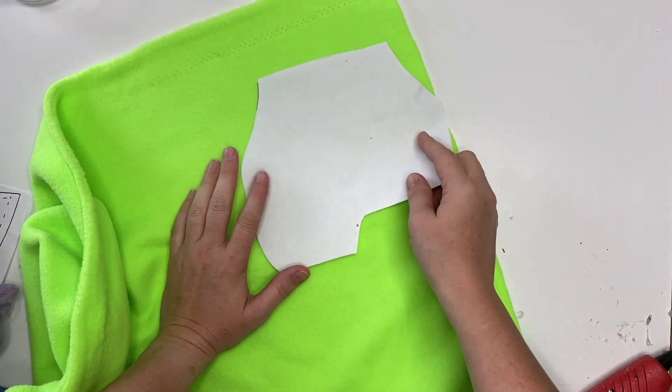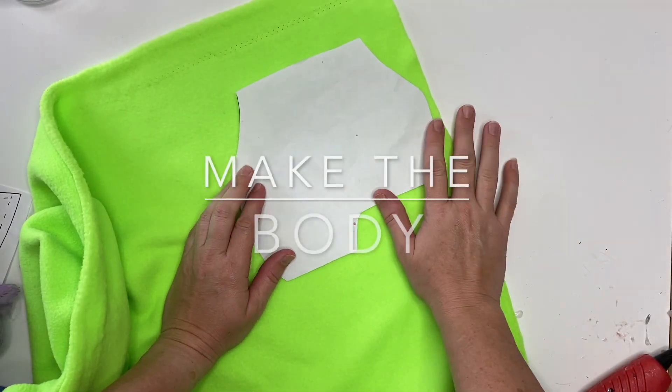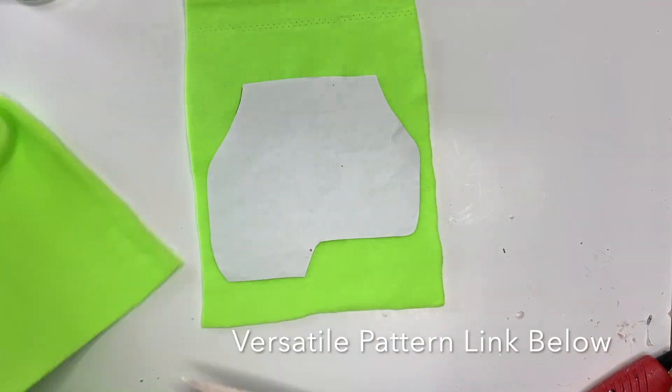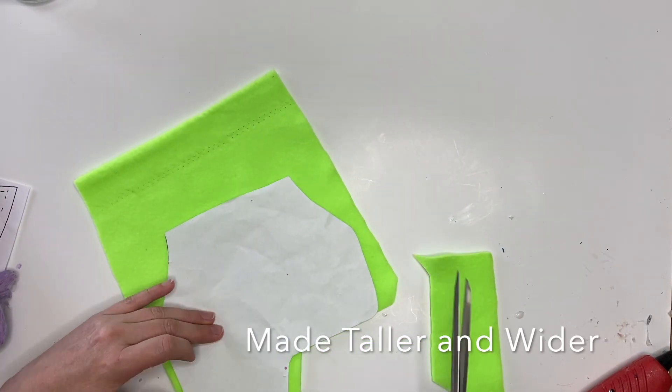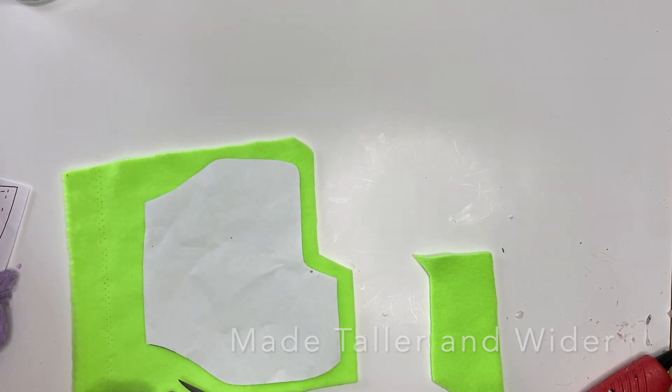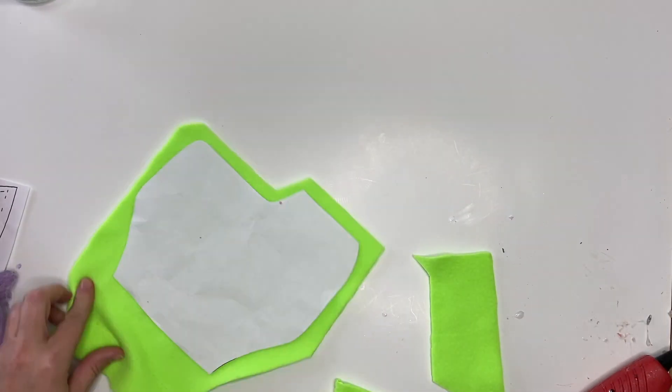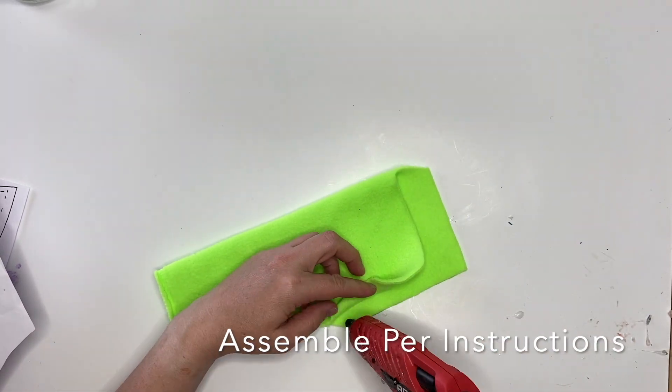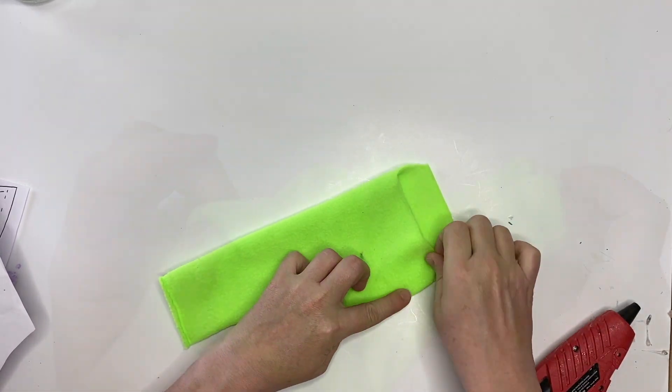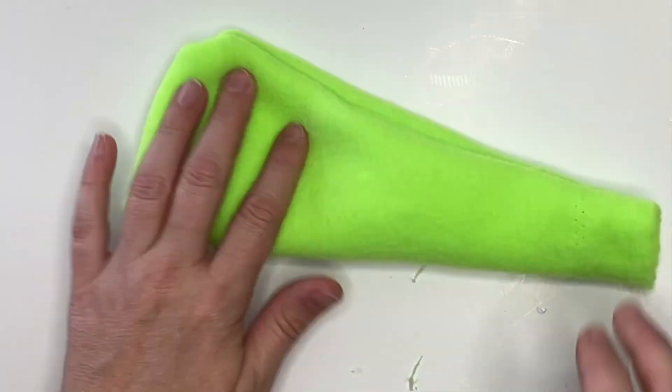Next up we're gonna take that no-sew gnome pattern for the body and I'll put that link below. What we're gonna do is we're actually gonna make it a little bit wider and a little bit taller—I wanted her to be sort of tall and thin, kind of spooky. We're gonna assemble it per the instructions.